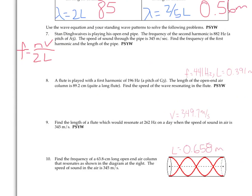For number seven, you're told that there's a second harmonic frequency of 882 hertz, and you're given the speed of the sound through the air at 345, and you're asked to figure out the frequency of the first harmonic and the length of the pipe. So the frequency of the first harmonic is really just half of 882, because the second harmonic should be twice as high a frequency as the first harmonic.